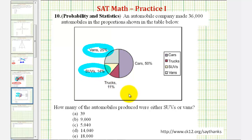And therefore, 25% plus 14% or 39% of the automobiles are either SUVs or vans.